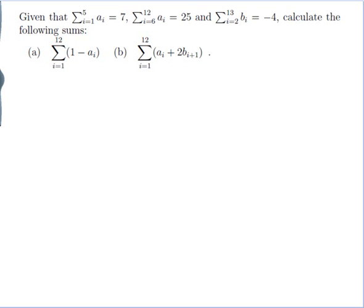Given that the sum from i equals 1 to 5 of ai is 7, the sum from i equals 6 to 12 of ai is 25, and the sum from i equals 2 to 13 of bi equals minus 4, calculate the following sums: (a) the sum from i equals 1 to 12 of 1 minus ai, and (b) the sum from i equals 1 to 12 of ai plus 2bi plus 1.